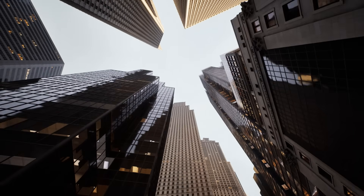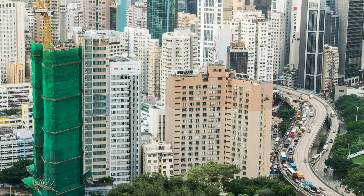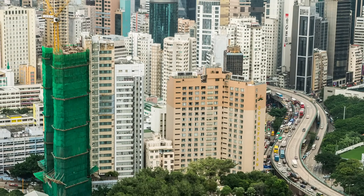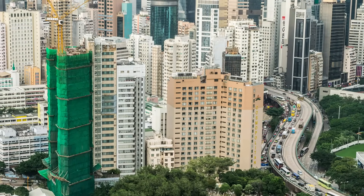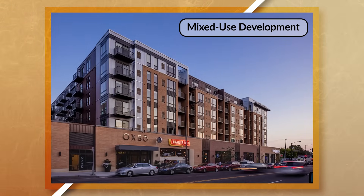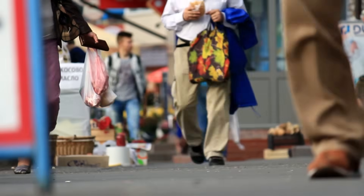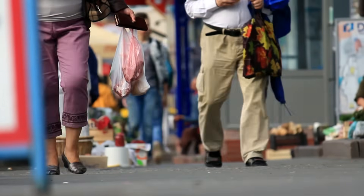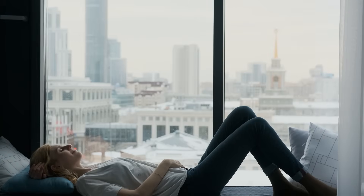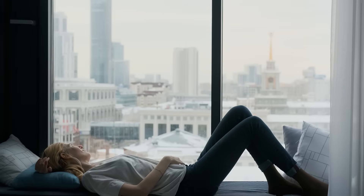Densely populated cities often have skyscrapers and buildings that build upwards instead of outwards. Buildings are often clustered together with space being optimized for efficiency, resulting in taller buildings with a smaller lot size and more mixed-use buildings. You'll find multi-story buildings that have apartments on the upper levels and retail stores or offices on the street level, with a parking lot found underground.